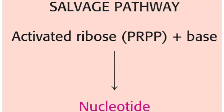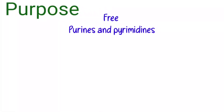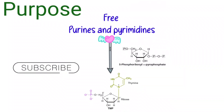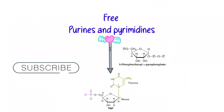The source of activated ribose is phosphoribosyl pyrophosphate (PRPP). When this attachment takes place with the activated ribose, it gets converted into corresponding nucleotides. The main purpose of salvage pathways, whether purine or pyrimidine, is to recover and reconnect the free bases to an active ribose unit.